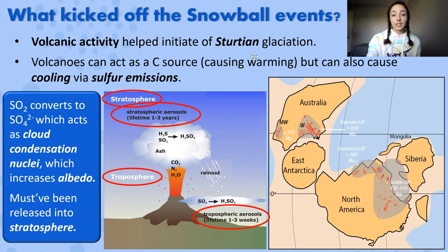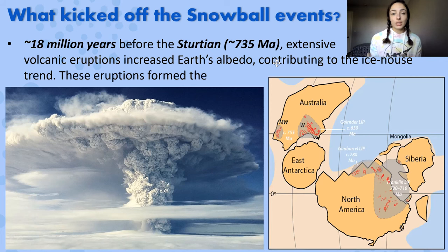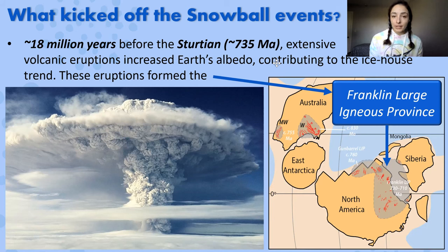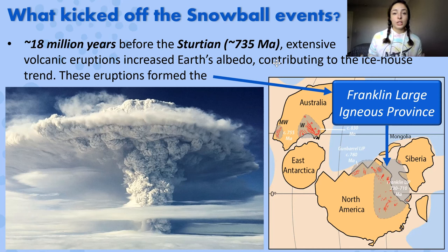In the case of the Sturtian glaciation, there were extensive volcanic eruptions with evidence of ash reaching the stratosphere, causing a long-term sulfate cooling trend that increased Earth's albedo long enough to help kick off the icehouse climate. We can see evidence for these eruptions today in the Franklin Large Igneous Province, dated to 730–710 million years ago. However, this alone couldn't cause a Snowball Earth event — all of these causes combined created the perfect storm.